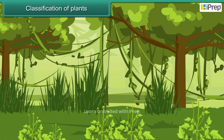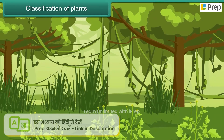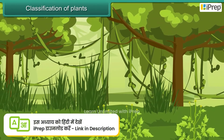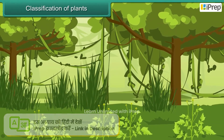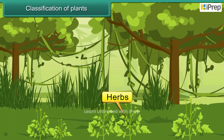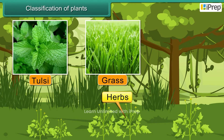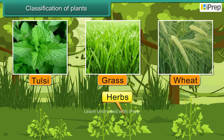Plants are classified in the following ways according to their size. Herbs: small plants with soft and tender stems are called herbs. For example, tulsi, grass, and wheat.